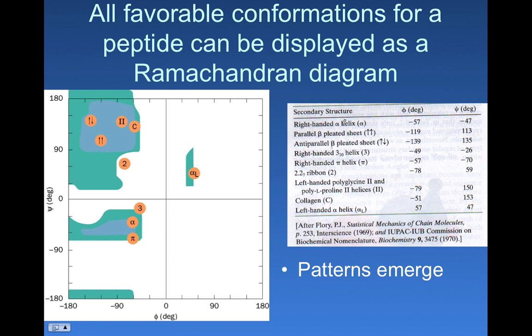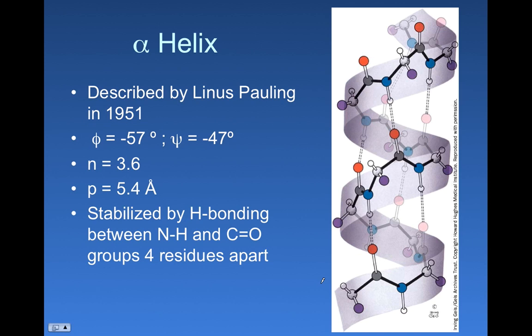Now let's start by thinking more in depth about the alpha helix, which has a phi bond angle of minus 57, a psi bond angle of minus 47, and that leads to some sort of stability. Let's try to see why.